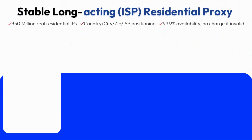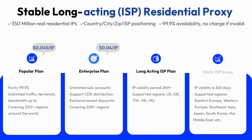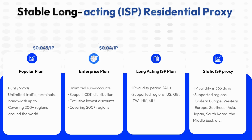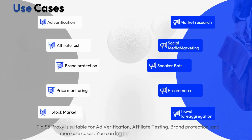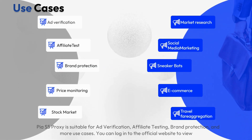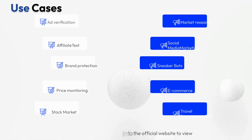Currently there are three plans: the popular plan, enterprise plan, and long-acting ISP plan with static ISP proxy. PIA S5 Proxy is suitable for ad verification, affiliate testing, brand protection, and more use cases. You can log in to the official website to view.